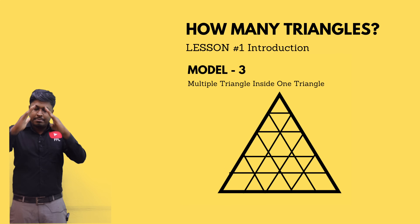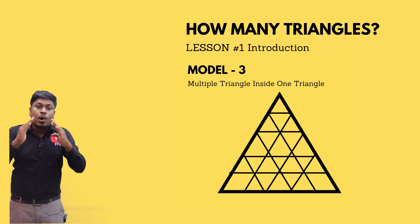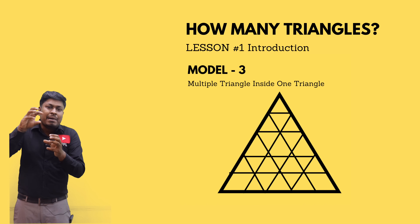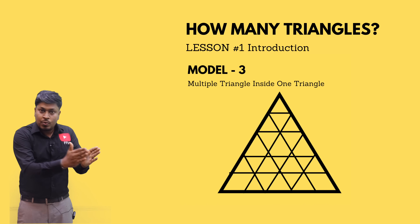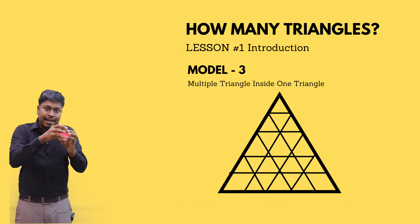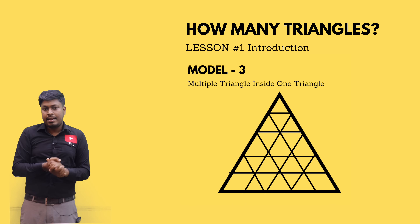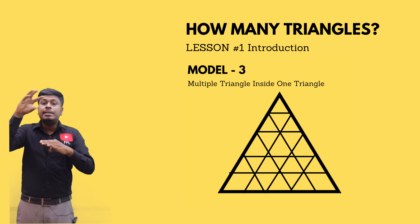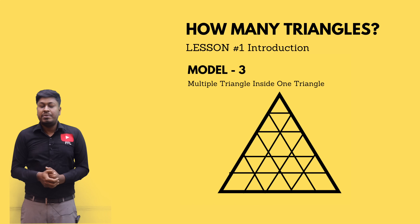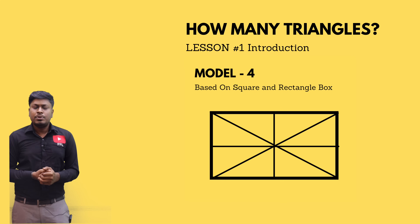Model number three: similarly there is only one outermost triangle, but inside that outermost triangle you can see multiple triangles. You can compare model two and model three — in model two, inside one triangle there is another single triangle nested in, but in model number three, inside one single triangle there are multiple triangles. That is called model number three.